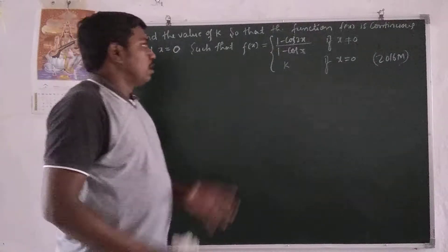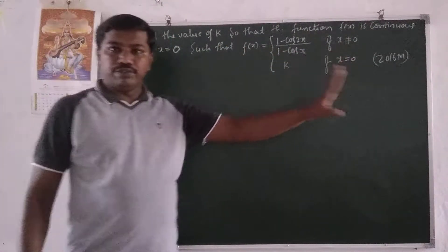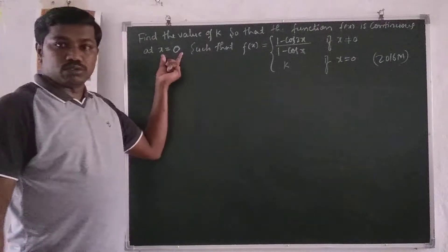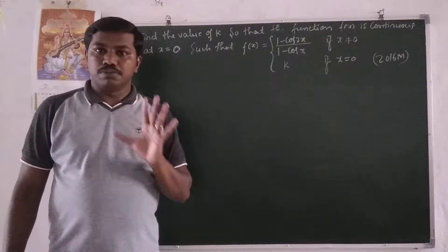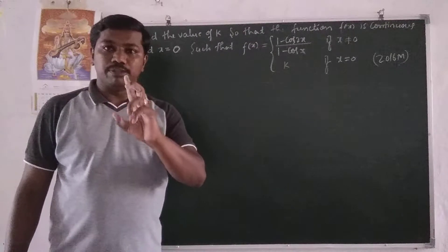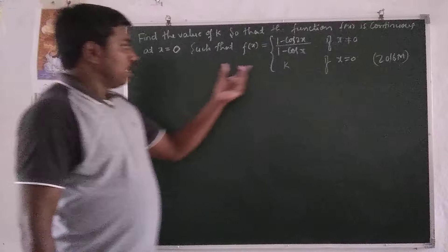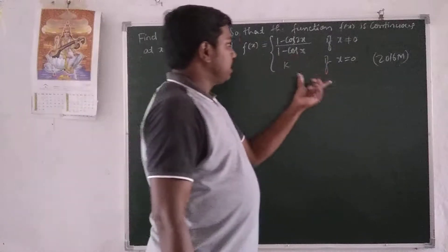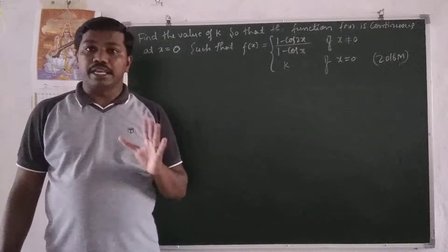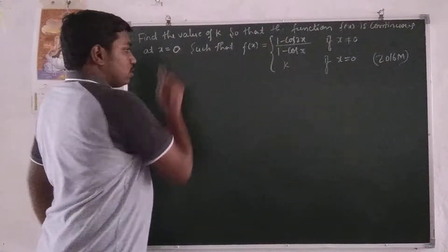So the next problem: f of x is already continuous, find the value of k at the indicated point x is equal to 0. If a is 0, confirm at the point of continuity. f of x is already continuous, you want to calculate k. So here we go — x is equal to 0 and continuous.